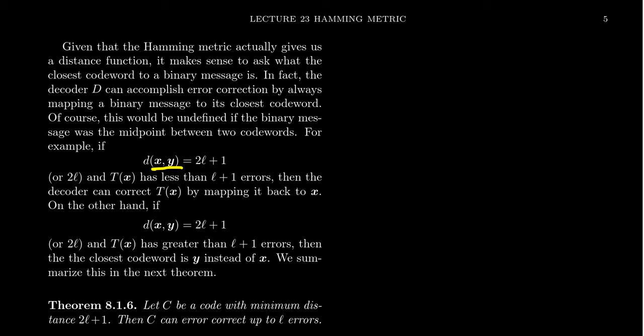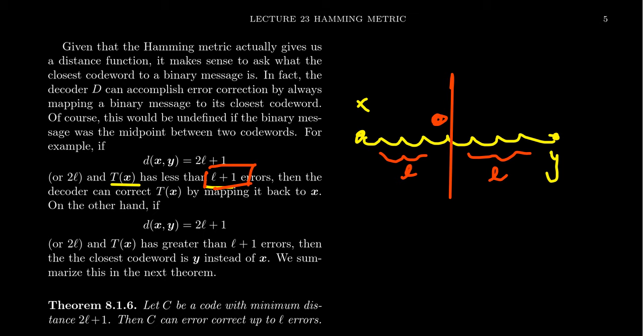But let's say the distance between two codewords, x and y, is 2l plus 1. And so then if T(x) is transmitted with less than l plus 1 errors, so like we have x over here, we have y over here. It's like every time there's an error, it's like you're taking a step from x towards something else. Take a step, take a step, take a step all the way. Eventually, if you have too many errors, you'll turn into y. Well, if there's a halfway mark, right, so you have l over here and l over here. If you have fewer than l plus 1 many errors, then you're over here somewhere and it's like, oh, x was the word we came from. Of course, if you have too many errors, you might think y was where we came from. So we don't want that.